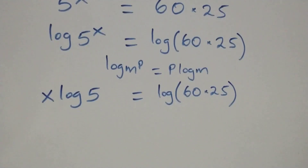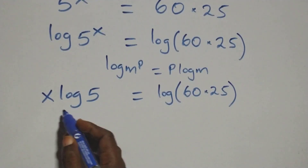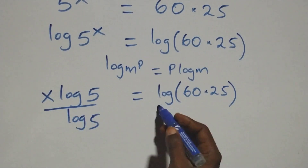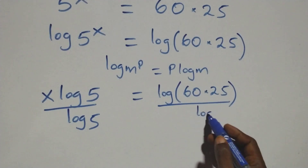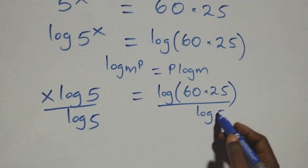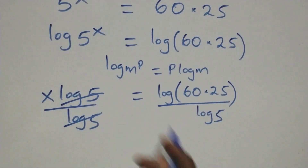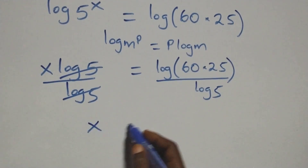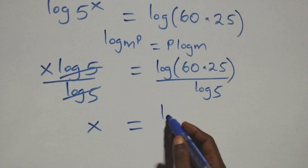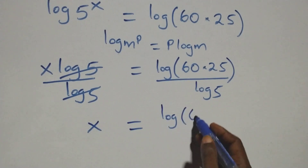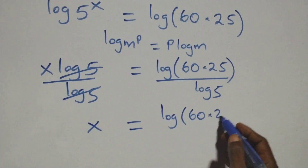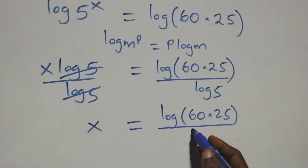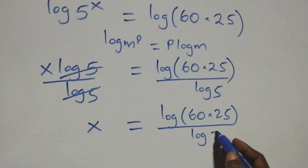Then the next step, we divide both sides by log 5 — divide this side by log 5, and also divide this side by log 5. Log 5 cancels with each other, and we have x equals log(60 times 25) over log 5.